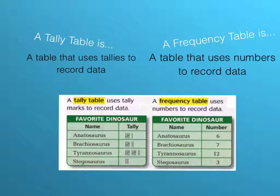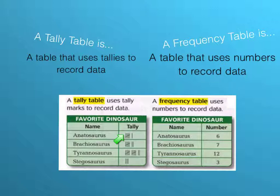A frequency table is a table that uses numbers to record data. It takes the same information from the tally table and puts it in number form. So instead of six tallies for the anatosaurus, we put the number six. Seven tallies over here, seven over here.